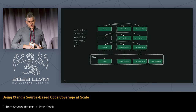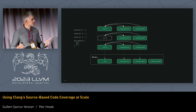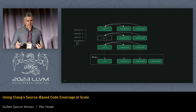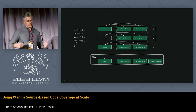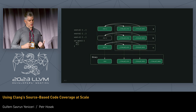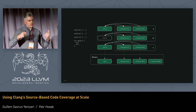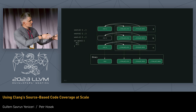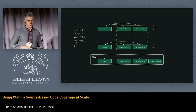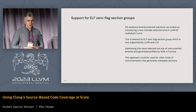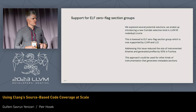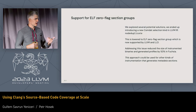The way we addressed this is by extending the notion of section groups in ELF. We introduced something called zero-flag section groups, placing all the coverage metadata into separate section groups associated with the original section. We also updated the linker so it can now see that these metadata sections belong to the original function and can garbage collect them as intended. In our case, this really helped: we saw a reduction in binary size as well as profile size of about 50 percent.